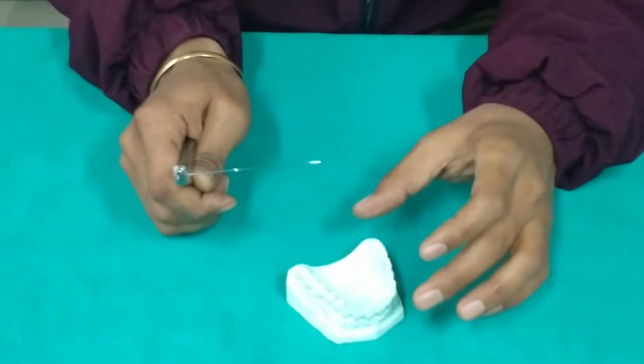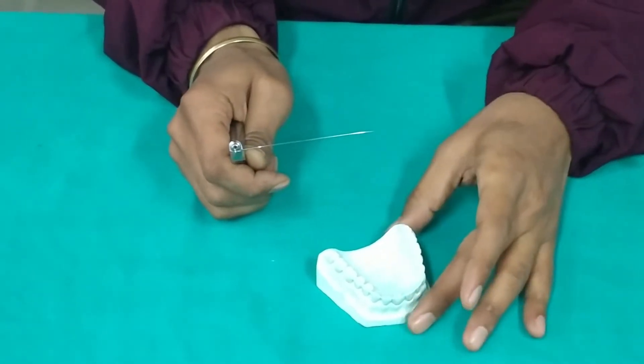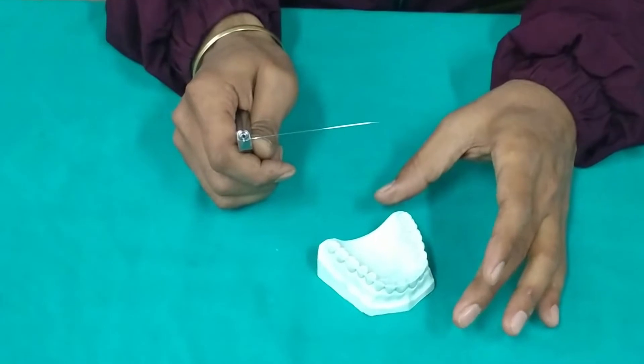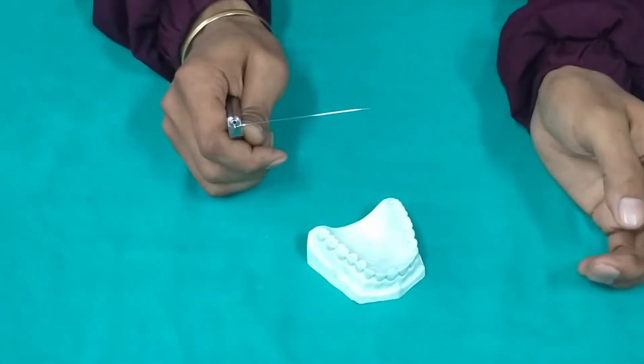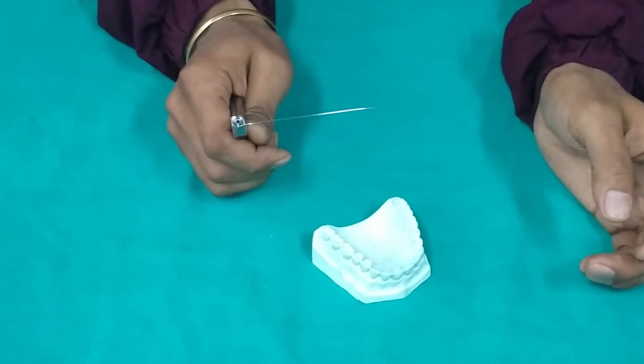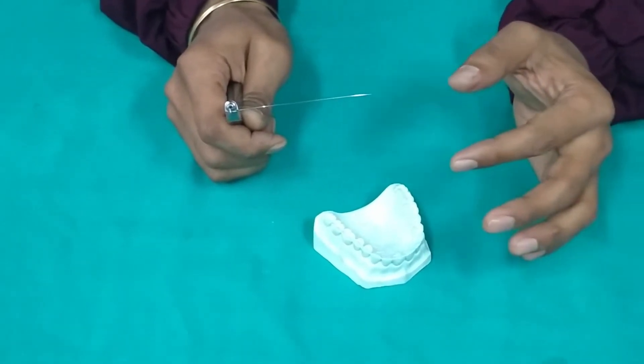Adams clasp consists of three parts. First, the connecting bridge, then the two arrowheads on the mesial and the distal embrasures, and retentive arm with tags.